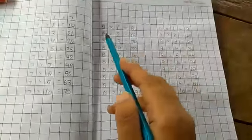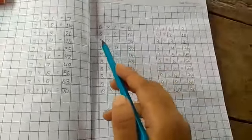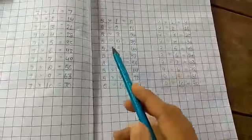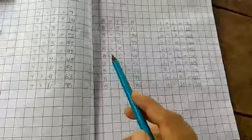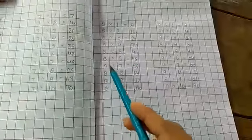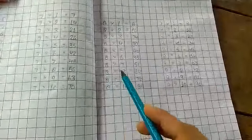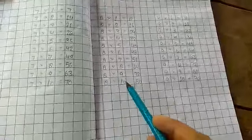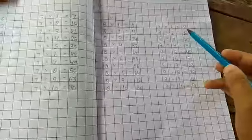8 1's are 8, 8 2's are 16, 8 3's are 24, 8 4's are 32, 8 5's are 40, 8 6's are 48, 8 7's are 56, 8 8's are 64, 8 9's are 72, 8 10's are 80.